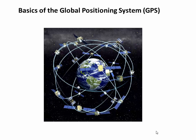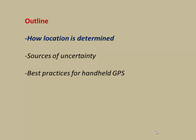Welcome to this video on Basics of the Global Positioning System, or GPS. In this video we're going to try to do three things: talk about how the location of your handheld GPS receiver is determined, talk about why that position is probably wrong and what the sources of uncertainty are, and then finish briefly by looking at best practices for using a handheld GPS in the field.